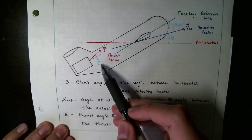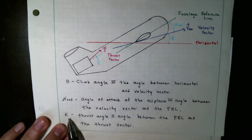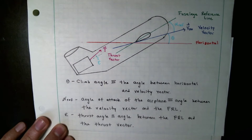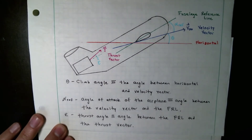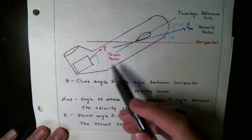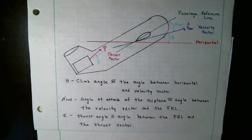Now let's go over the thrust angle, denoted by epsilon, which is an offset or angle from the FRL to the thrust vector. By design this is usually negligible, but in terms of deriving a general set of equations of motion we want to include all possibilities. It's much easier to later set these angles to zero than to start with simplifications and not be able to go back the other way.